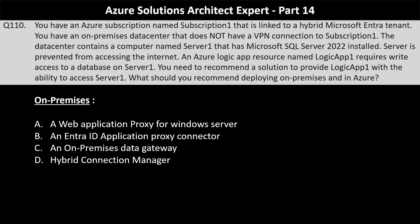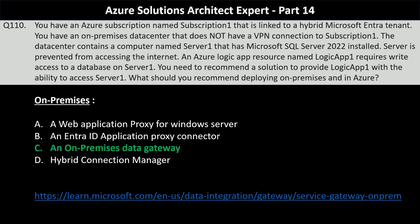The first part of the question asks about the on-premise deployment. The options are a web application proxy for Windows Server, an EntraID application proxy connector, an on-premise data gateway, and hybrid connection manager. You should configure the on-premise data gateway to allow Logic App 1 to access the SQL Server database on Server 1. The on-premise data gateway enables secure communication between on-premise data sources such as SQL Server and Azure services like Logic Apps, and it does not require the on-premise server to have direct internet access.